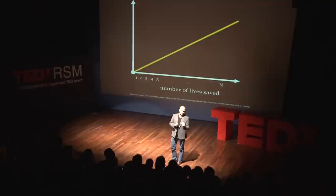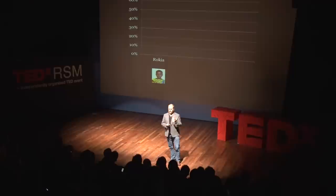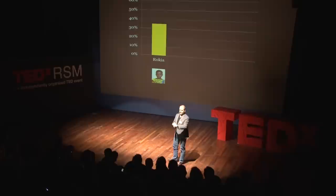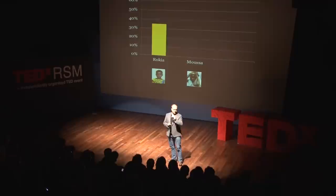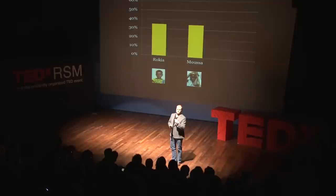Consider this experiment. People were asked to donate some of their money to a charity to save the life of Rukia, a starving girl in Mali, Africa. People, on average, contributed 35% of their money. A second independent group of people was asked to save the life of Musa, a boy in the exact same situation as Rukia, and on average, people contributed about the same. And this is important.